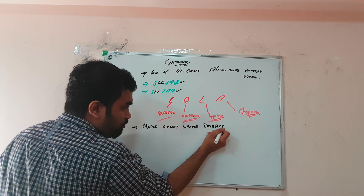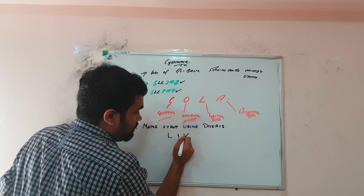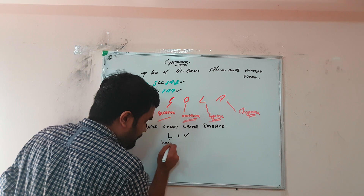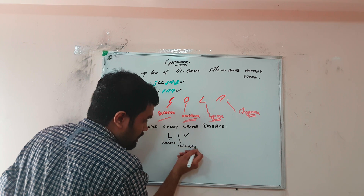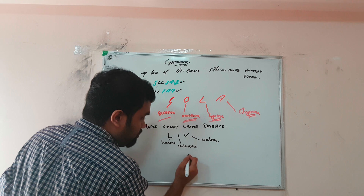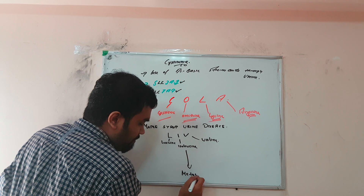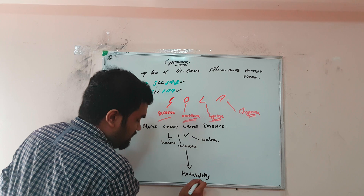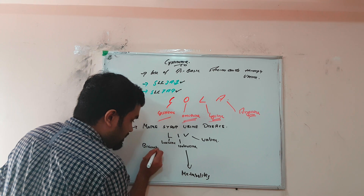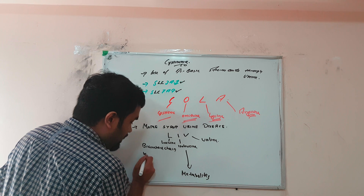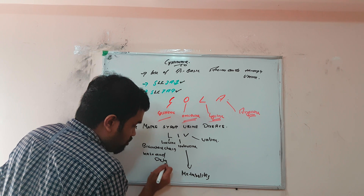From an MCQ point of view, maple syrup urine disease involves the branched-chain amino acids: leucine, isoleucine, and valine. These are metabolized by an enzyme known as branched-chain keto acid dehydrogenase, abbreviated as BCKD.